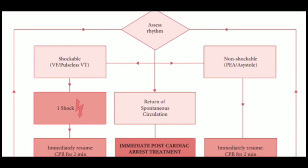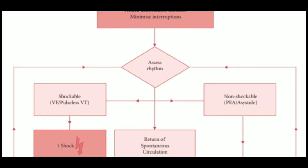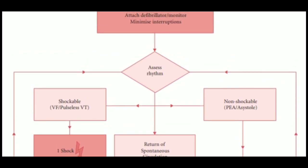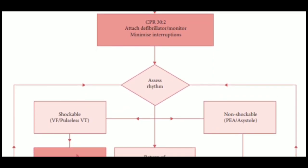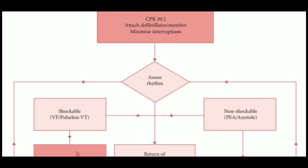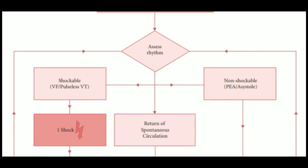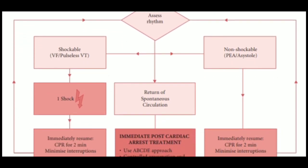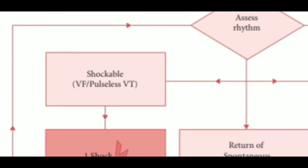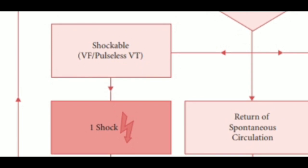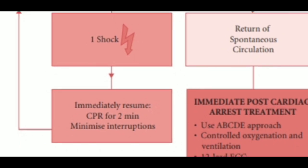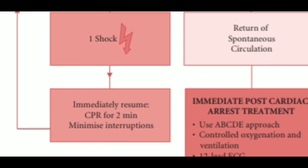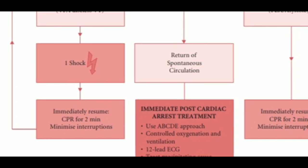We try to find out what type of rhythm is showing. If we have a shockable rhythm — like ventricular fibrillation (VF) or pulseless ventricular tachycardia (pulseless VT) — we give one shock to the patient. As shown in the algorithm, after giving the shock we will immediately resume CPR for two minutes and minimize interruptions.